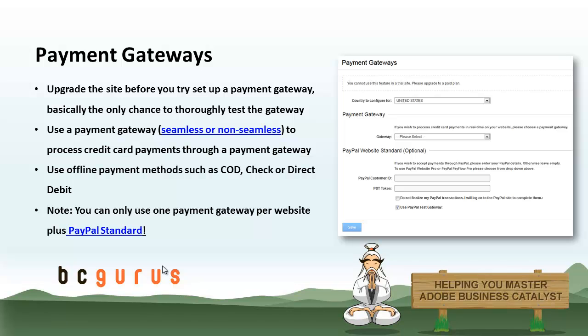Now let's talk about payment gateways. The very first rule of setting up a payment gateway on the Business Catalyst system is that you have to upgrade your site to a paid site before trying to set up your payment gateway. If you do not upgrade your site to a paid site, all your efforts of trying to set up a payment gateway will be fruitless. There are three main ways of accepting payments online on the Business Catalyst system: you can use a payment gateway — either seamless or non-seamless — to process credit card payments immediately through a payment gateway.